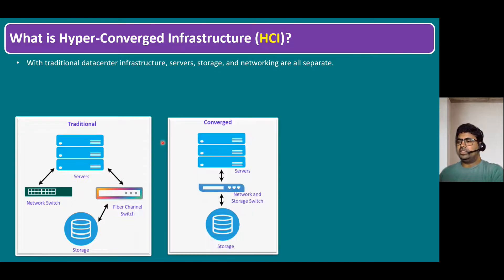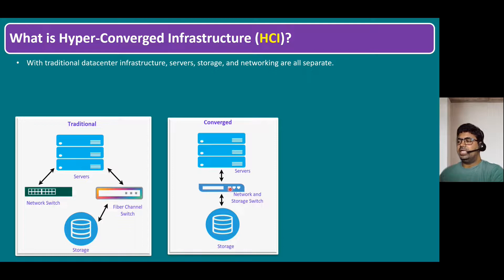The next one is converged infrastructure. Converged infrastructure means instead of separate network switches and fiber channel switches, we are using a normal network switch. This network switch is converged — it supports normal network connectivity and also helps you access iSCSI storage. Internet SCSI means there is no need for a fiber channel switch; we can use a normal existing switch for storage access.